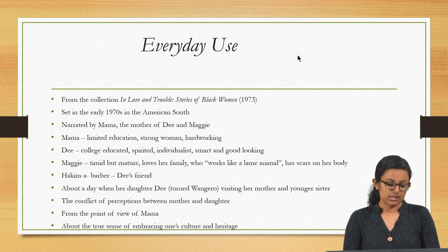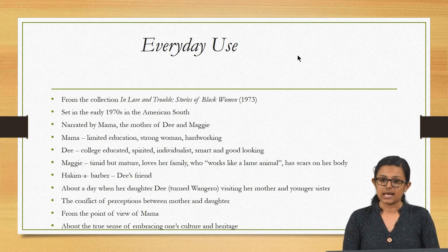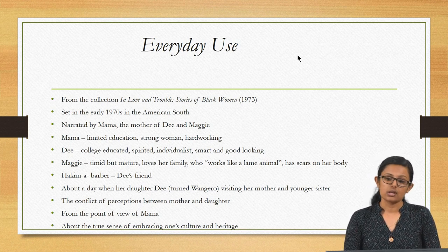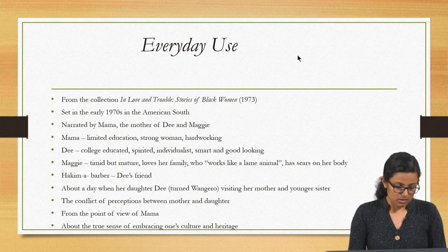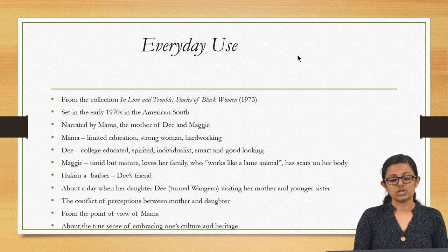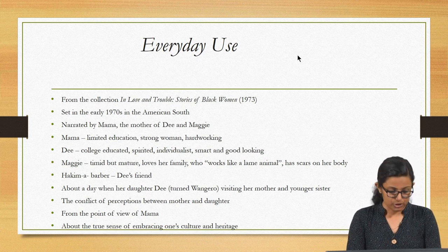This story is set in the early 1970s in the American South. There are three principal characters: a mother referred to as Mama, and her two daughters Dee and Maggie. The entire story deals with a day's events when the elder daughter Dee comes home to visit her mother and younger sister. The story is narrated from the point of view of Mama, an uneducated black woman.